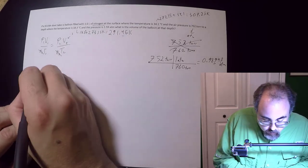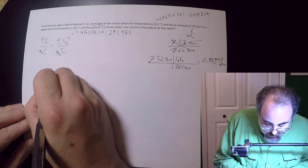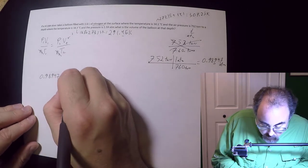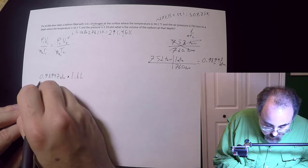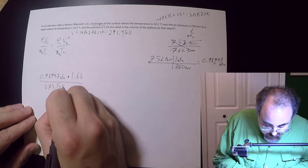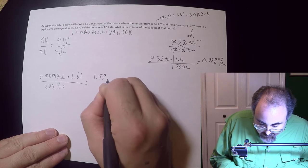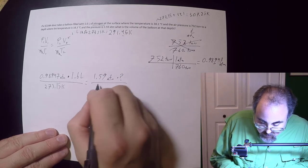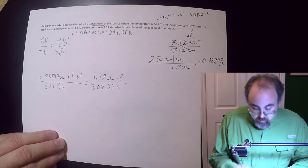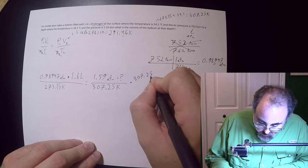So what I'm going to do is I'm going to take this and I'm going to recreate it, but now with actual numbers that I know. So this is going to be 0.98947 atm times 1.6 liters divided by 291.45 kelvin equals 1.59 atm times I don't know what divided by 307.25. Now it's just algebra. So I'll go ahead, I'll times both sides by 307.25 k.